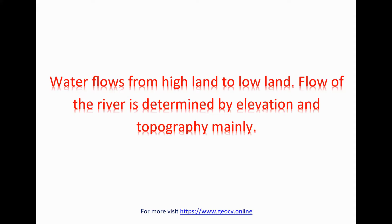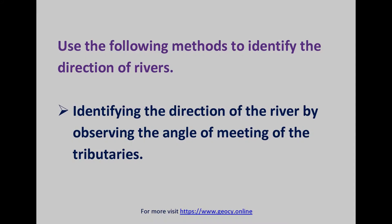Water flows from highland to lowland. The flow of a river is determined mainly by elevation and topography. Use the following methods to identify the direction of rivers.